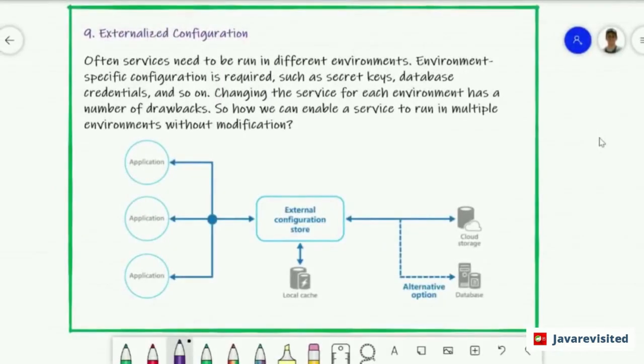Number nine is Externalized Configuration. Often services need to be run in different environments. Environment-specific configuration is required such as secret keys, database credentials, and so on. Exchanging the services for each environment has a number of drawbacks, so how can we enable services to run in multiple environments without modification? You can find more details about externalized configuration in the link below.